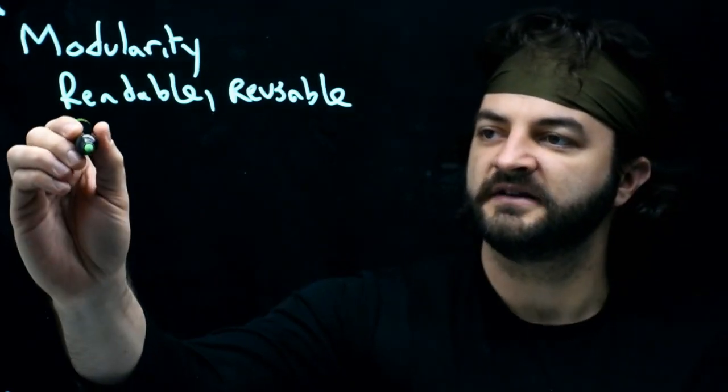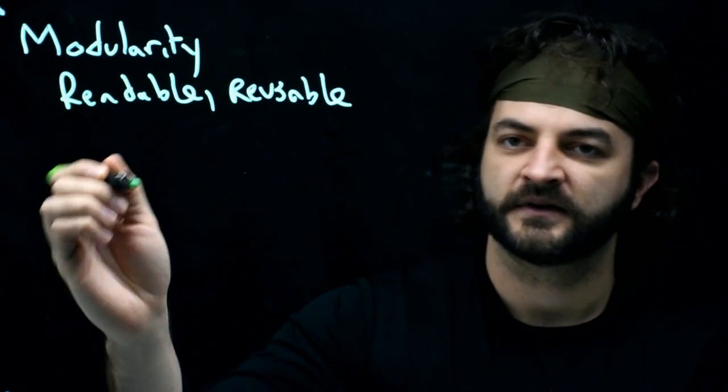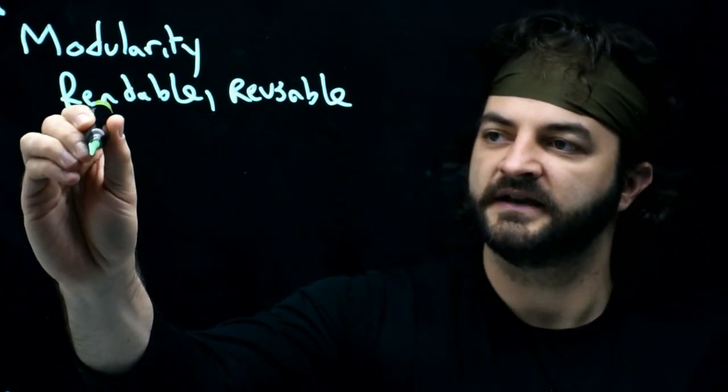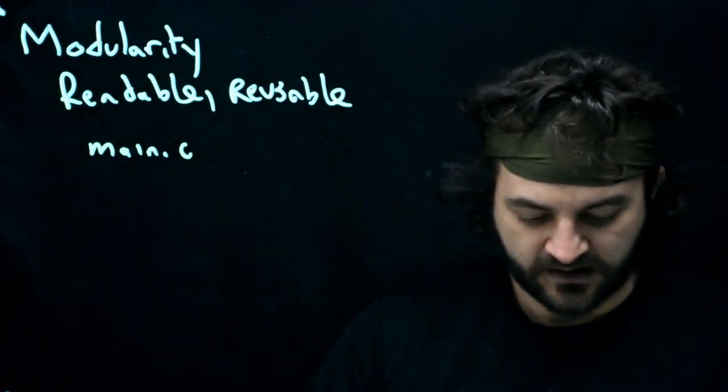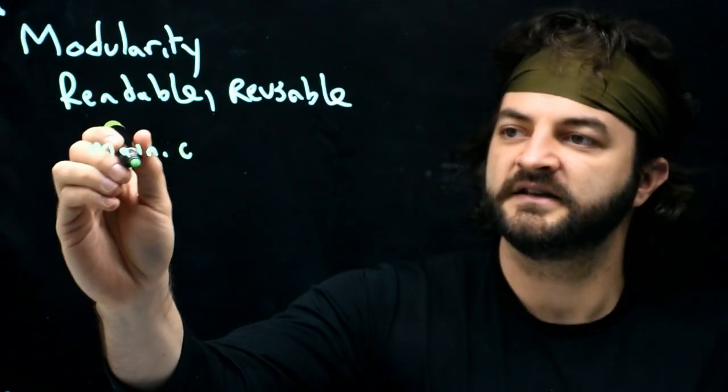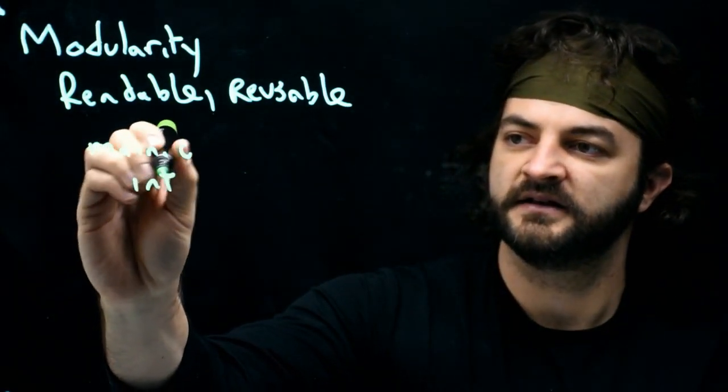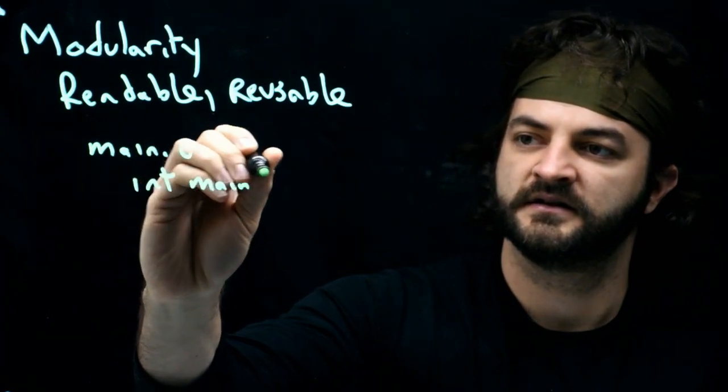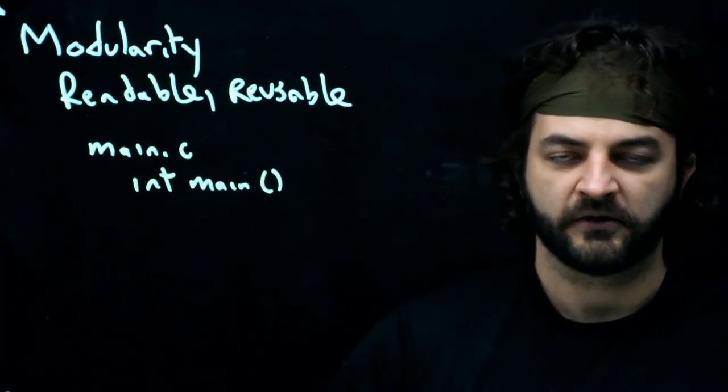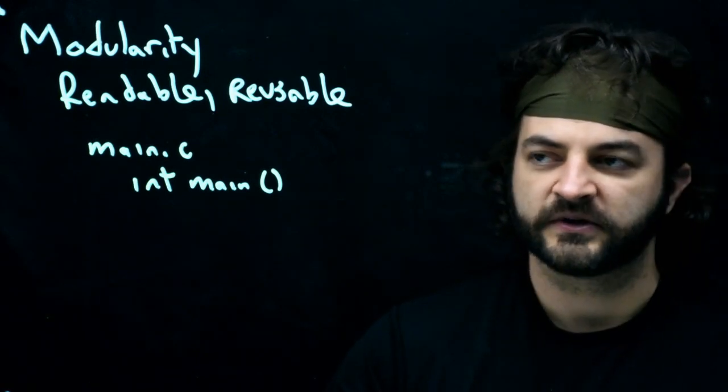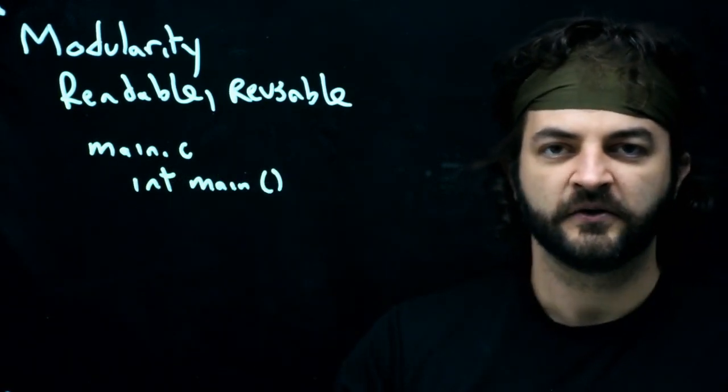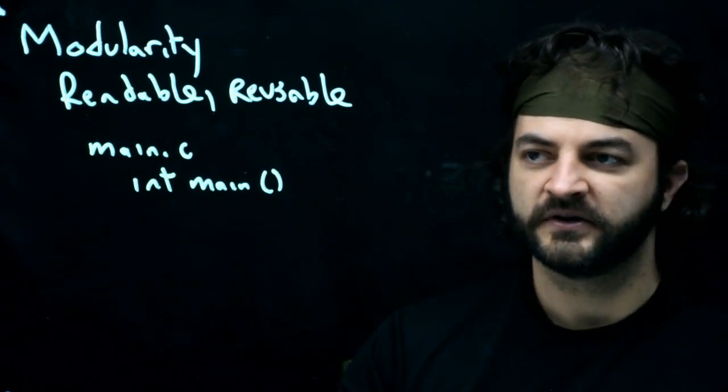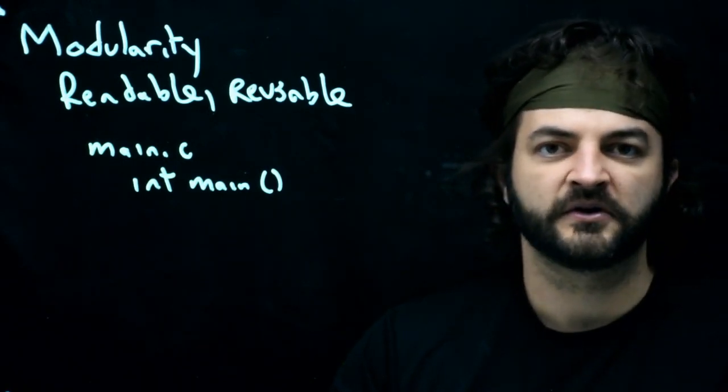Every project that we make is going to have a main.c. The key is that inside of that is int main, which is the function where our program begins. The compiler is looking specifically for this one function. That's the only requirement we have in all of our code. We have to have an int main somewhere, and we can only have one of them.